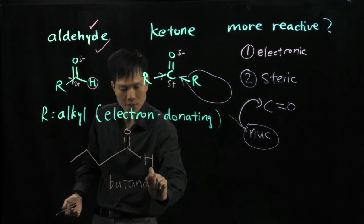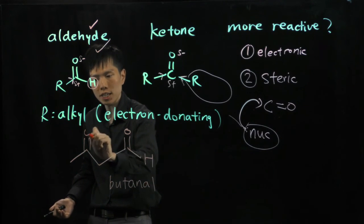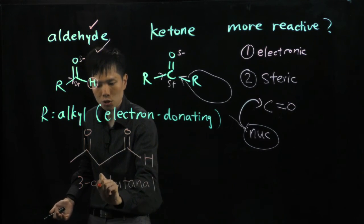And we put a ketone group over here, one, two, three. So this is 3-oxo butanal.